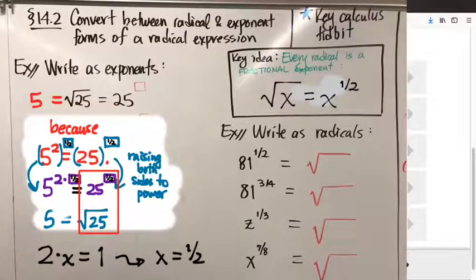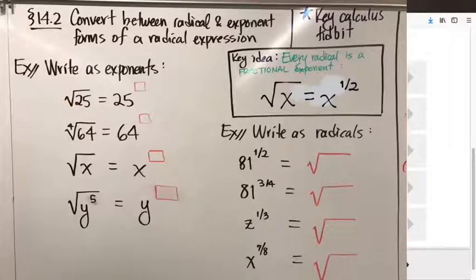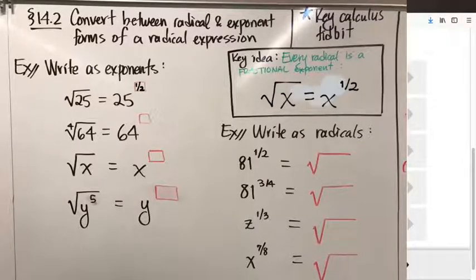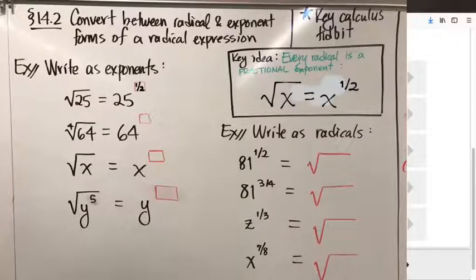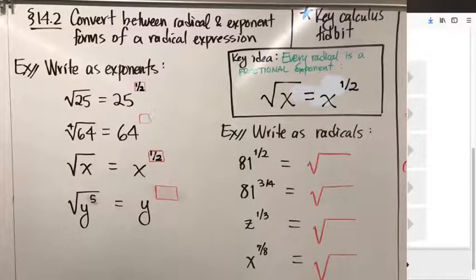Going back to fill in our chart: 25 to the 1-half power is another way of writing the square root of 25. And therefore x to the 1-half power — because the argument works exactly the same if it's x instead of 25 — x to the 1-half power is the square root of x.